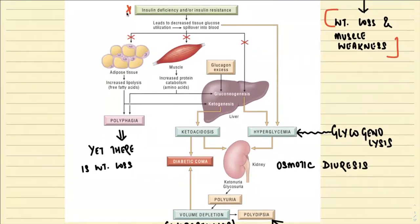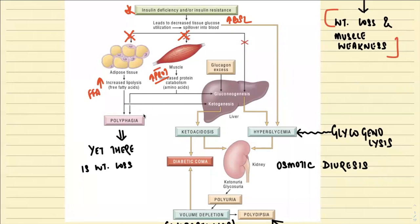When there is insulin deficiency or insulin resistance, there is spillover of excessive glucose in the blood circulation that cannot be utilized by adipose tissue or muscles. Without insulin action, there is a catabolic state — breakdown of fat with release of free fatty acids, and catabolism of muscle proteins. This excessive breakdown of adipose tissue and muscle leads to polyphagia.